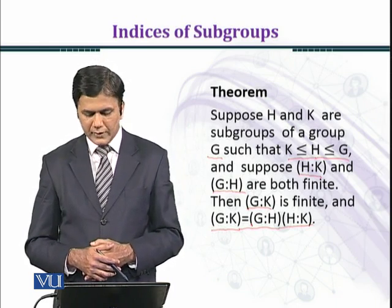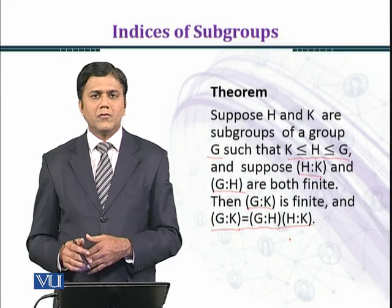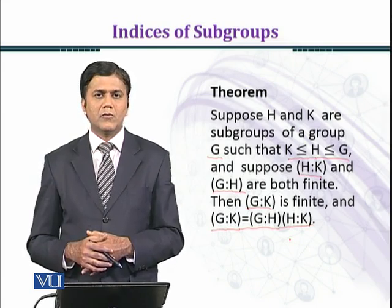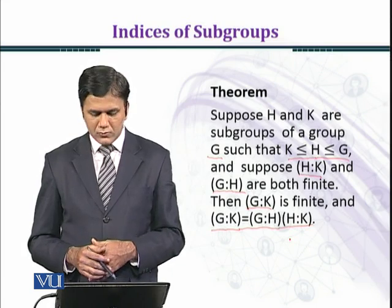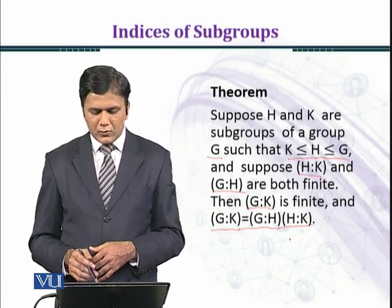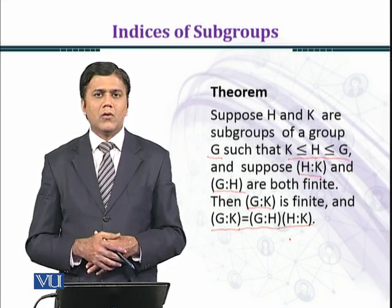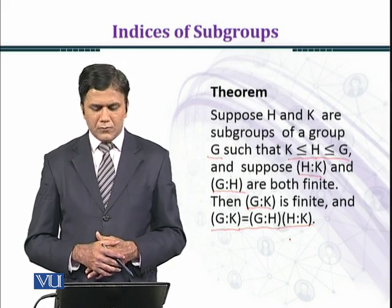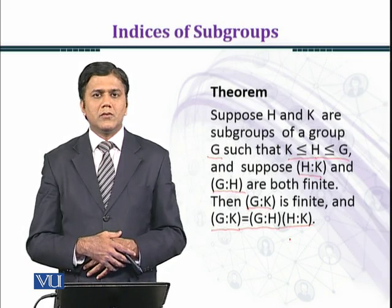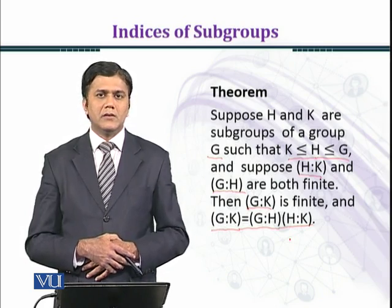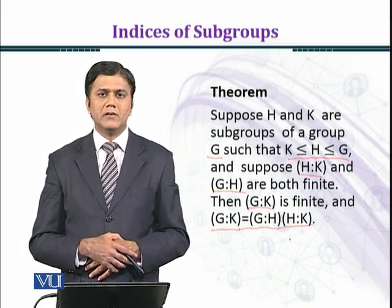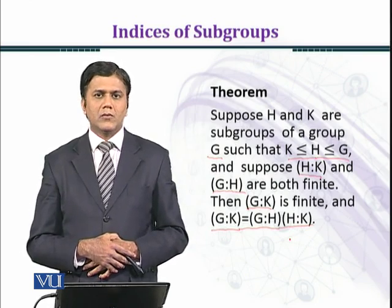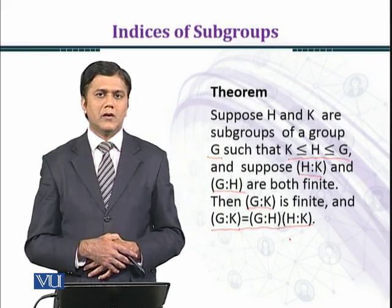The proof is straightforward: the index of H in G is given by order of G over order of H, multiplied by order of H over order of K. The order of H cancels, so we get order of G over order of K. In other words, this theorem states that the transitive property is satisfied in the case of the index of a subgroup in a group.